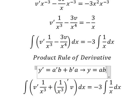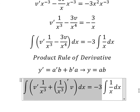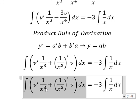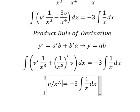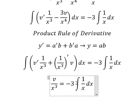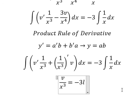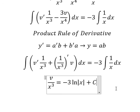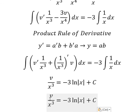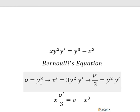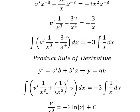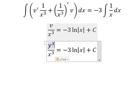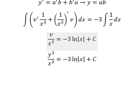The integration gives us v over s to the power of 3 equals ln of the absolute value of s, plus C. That gives us about v equals that expression. This is the end — thank you for watching.